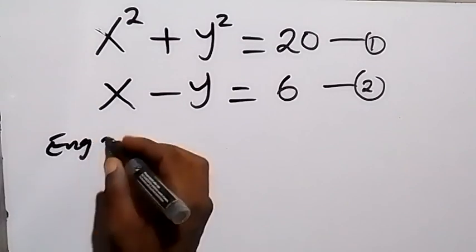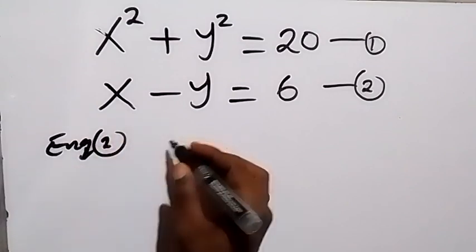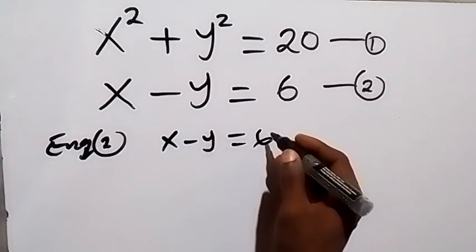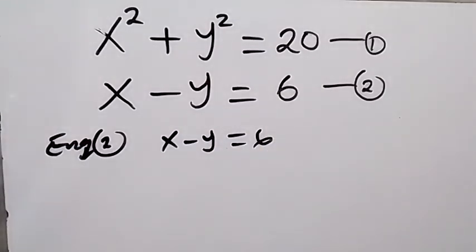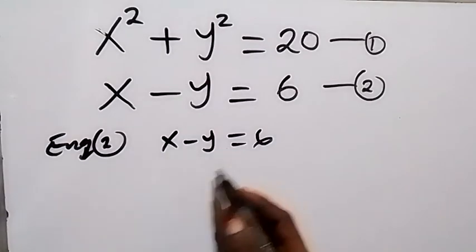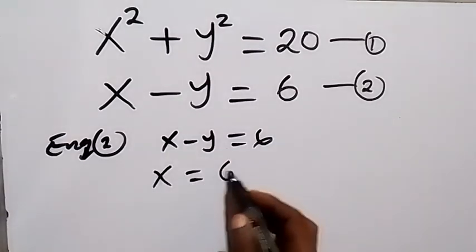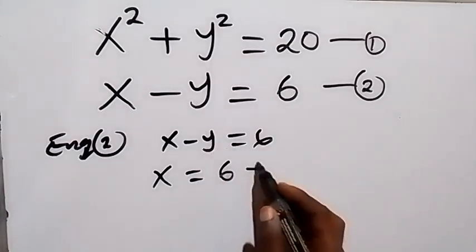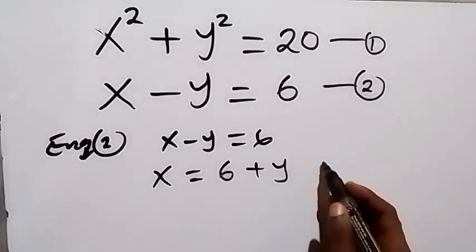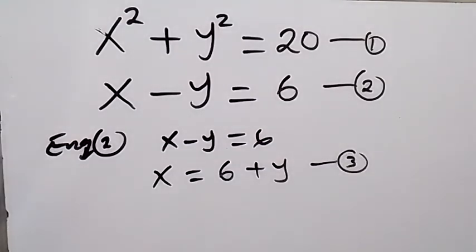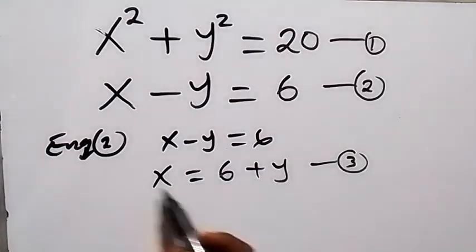From equation 2, we have x minus y equals 6. Now let's make x the subject. We have x equals 6 plus y. Let's call this equation 3. Now substitute equation 3 into equation 1.